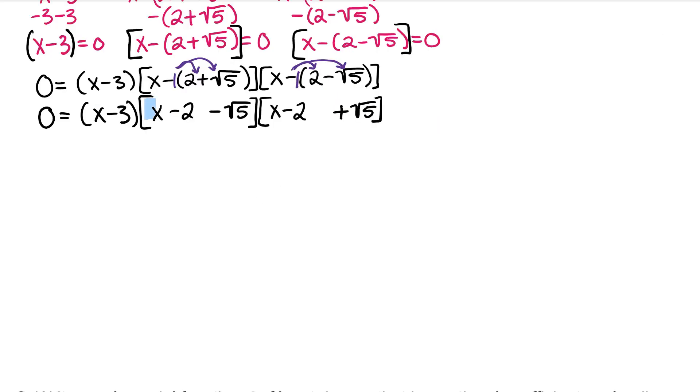Now you may not be able to see it, but here we have difference of perfect squares. See how we have a minus b times a plus b? Just because a is a group doesn't mean we don't have perfect squares here, and in this case we recognize that a is x minus 2 and b is root 5.